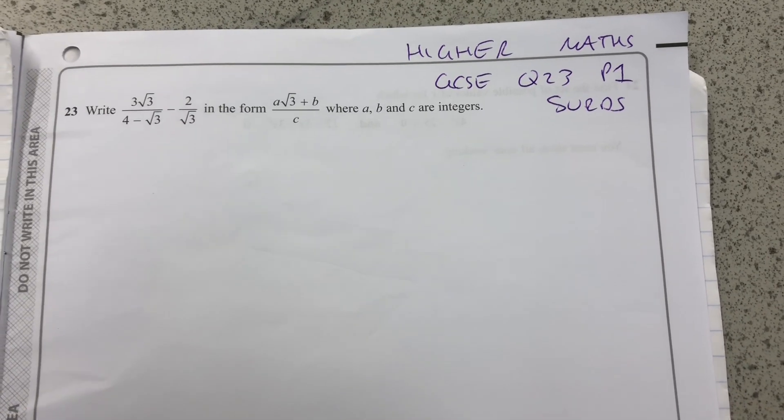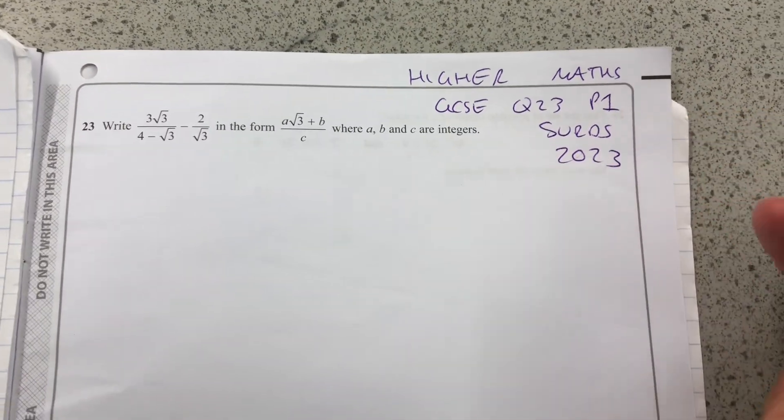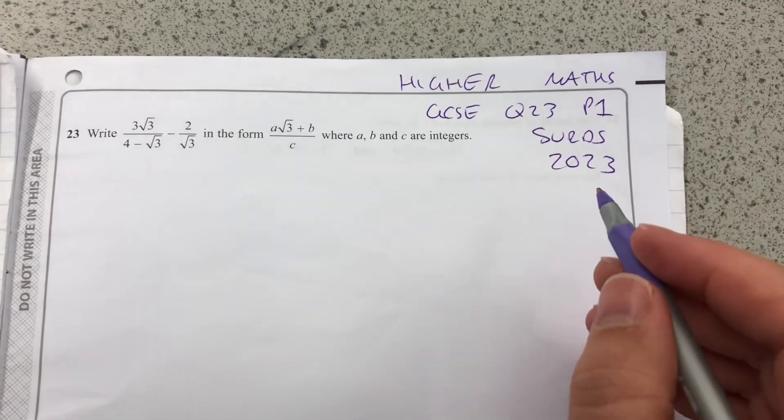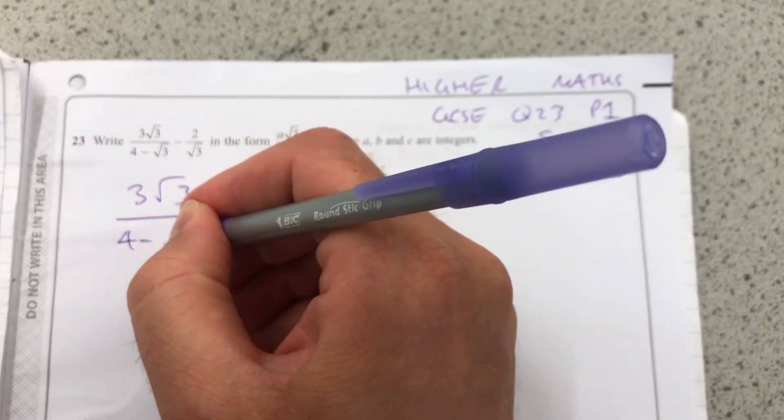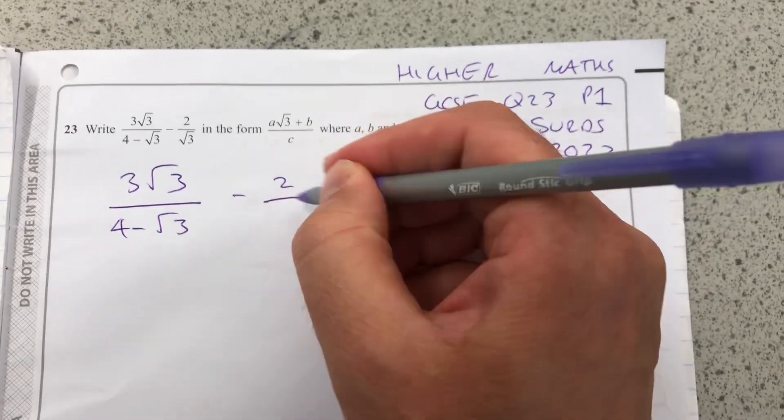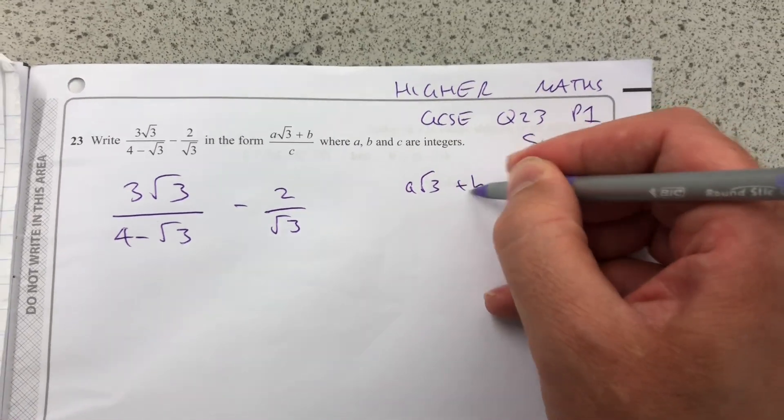Hello and welcome to Martin Maths. We're doing the Higher Maths GCSE Papers of 2023, and this is question 23 about surds. So we have 3 root 3 over 4 minus root 3, minus 2 over root 3, and we have to put it into the form A root 3 plus B over C.